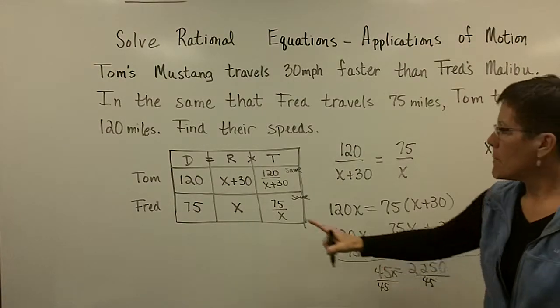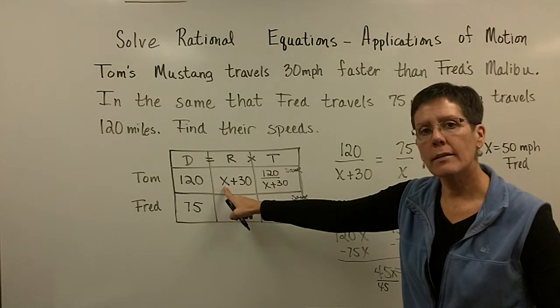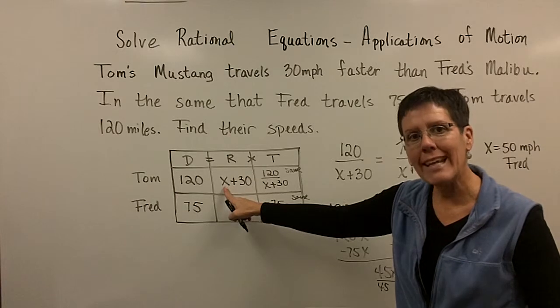So I'm going to say 50 miles per hour for Fred. That's his speed. And if Fred is 50, Tom is 30 more than that.